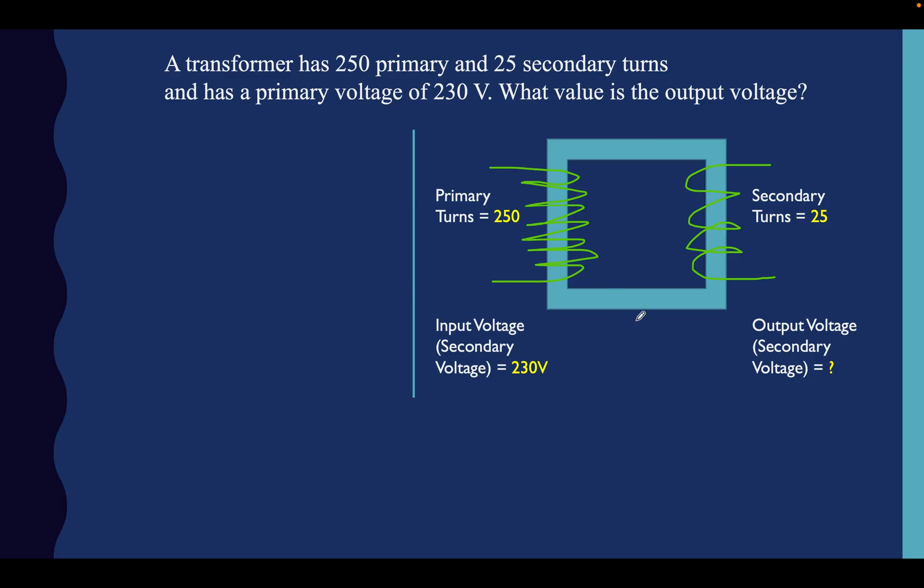So we've got a transformer here on the right again, and we've got a question above here. Let's read it. A transformer has 250 primary and 25 secondary turns and has a primary voltage of 230 volts. What value is the output voltage? Let's look at these again.